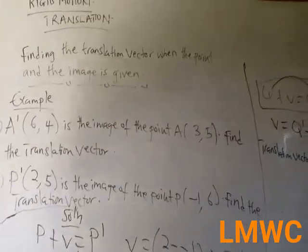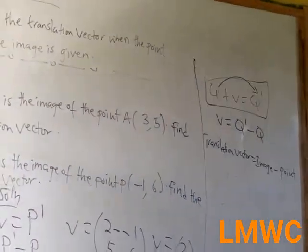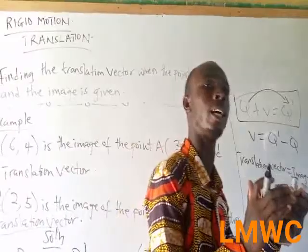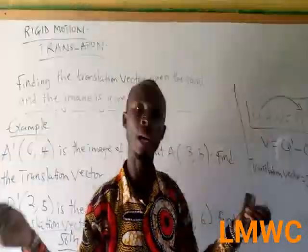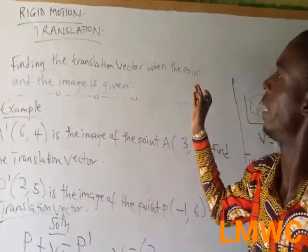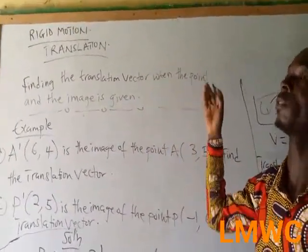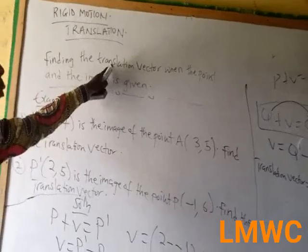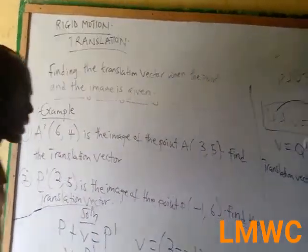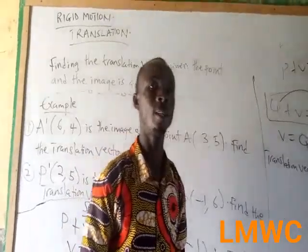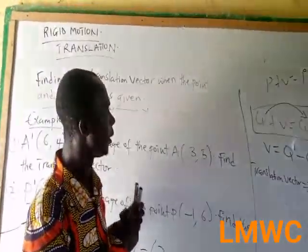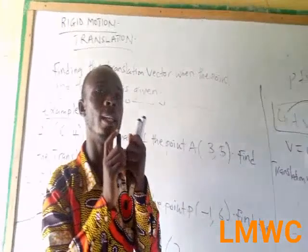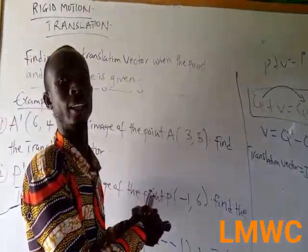I am done with translation. Translation has 3 main headings. First, they give you the point and the translation vector and ask you to find the image. Second, they give you a point and an image and ask you to find the translation vector. Third, they give you an image and the translation vector and ask you to find the points. This brings us to the end of today's lesson. In our next lesson, I will be taking questions on rigid motion using graph sheets. I believe we have understood translation under this session. Thank you.